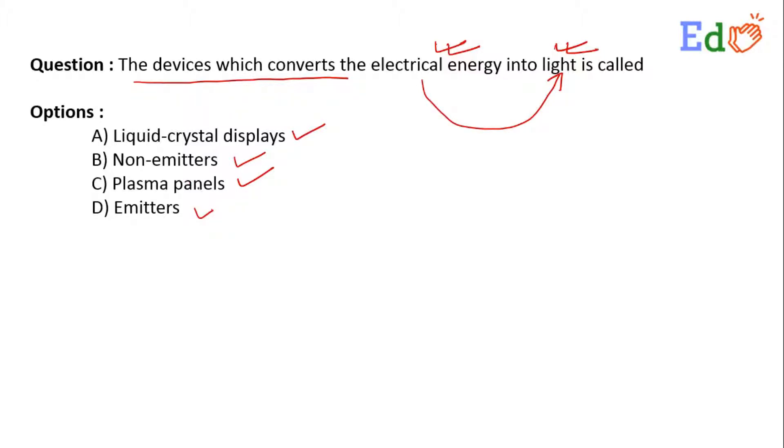If you consider their respective construction, they are not converting this electrical energy to light other than the emitters. So emitter is the device which will convert electrical energy to optical energy because they are mainly for emissions.